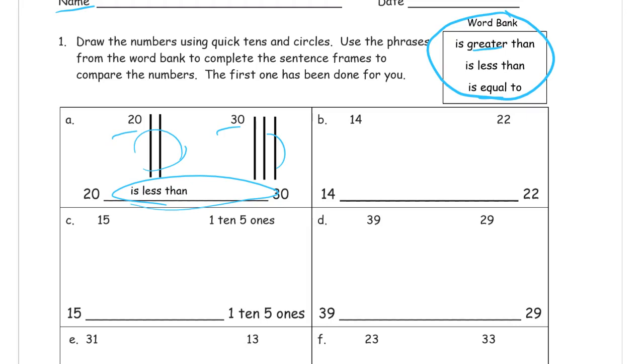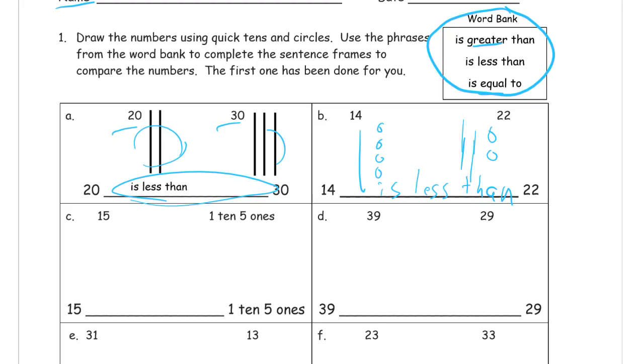So here we go. In B there's 14, that's a 10 and one, two, three, four ones. 22 is two tens and one, two ones. 14 is less than 22, so that's what I'm going to write. 14 is less than, just like that.